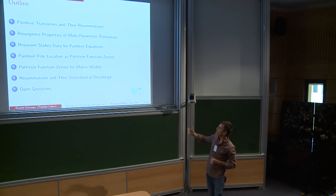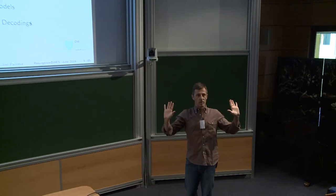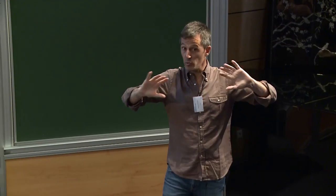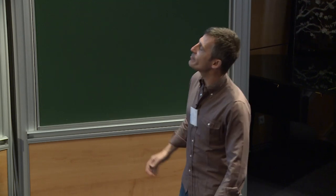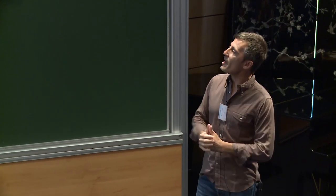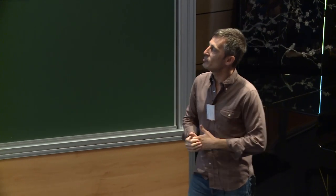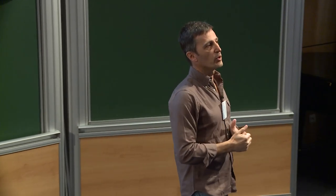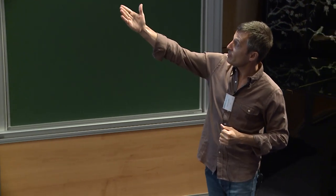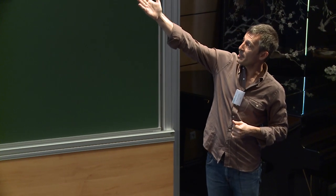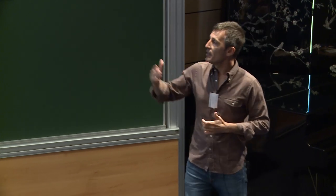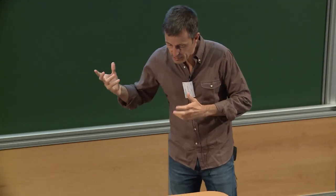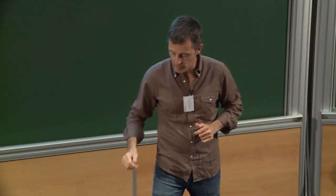Let me already give you the punchline. We don't have all the numbers — we have many, but not all — so that problem is still not solved. But let's assume that maybe we've solved for all of them, and we still hope to do that soon. Then I can move on, find out where all these poles are located, both for the Painlevé case and for the matrix model. And in the end, if there's time, I'll tell you about resummations and their semi-classical decodings — plural — and I'll tell you why I'm using plural.